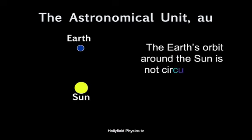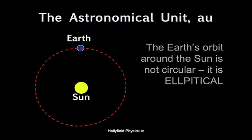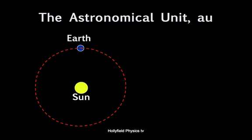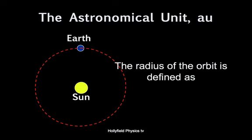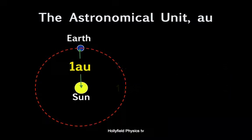First thing we're going to define is the astronomical unit, the AU. As the Earth orbits around the Sun, it traces out an elliptical path, not a circular one. So the radius of the Earth's orbit is really an average. And this is the definition of the astronomical unit, the radius of the Earth's orbit around the Sun. And it's got a value of 1.49 times 10 to the 11 meters.